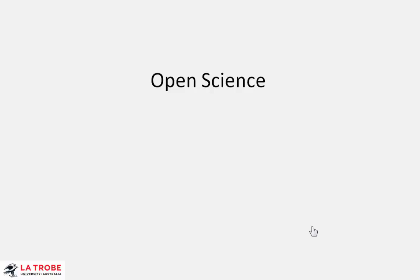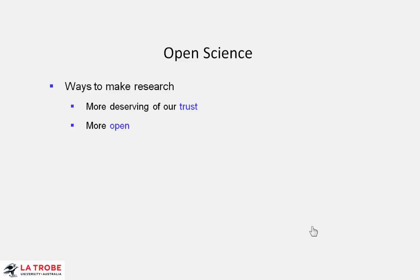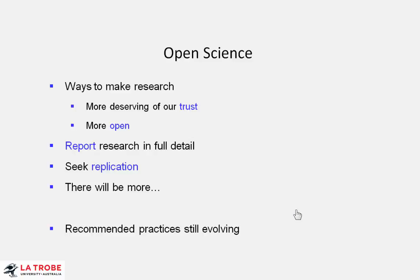Open science — that's really a hot topic at the moment. It refers to a number of ways to make our research more trustworthy and more open. I'll mention just two aspects at this stage. One is that research needs to be reported in full, complete detail. And second, we need replication. Throughout the book there will be more.